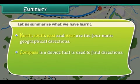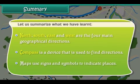To recap: a compass is a device used to find directions, and maps use signs and symbols to indicate places.